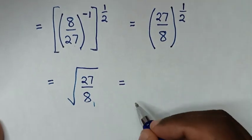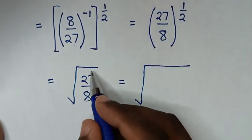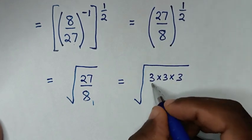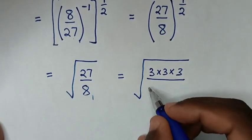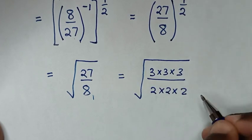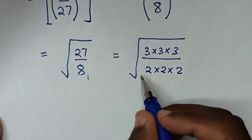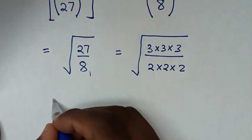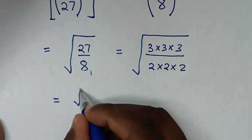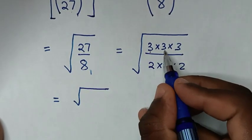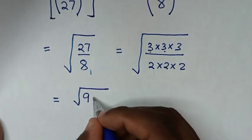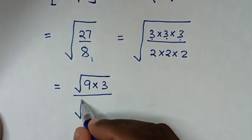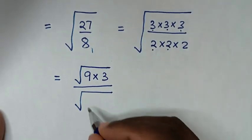Then it will be equal to — square root of 27, which is 3 times 3 times 3, over 8, which is 2 times 2 times 2. Then we separate this square root into the numerator and denominator. In the numerator, 3 times 3 is 9, so it will be 9 times 3.